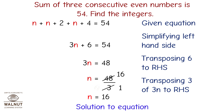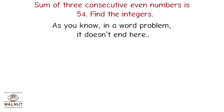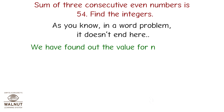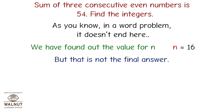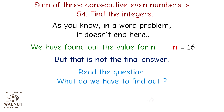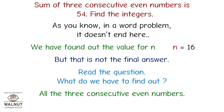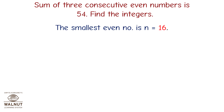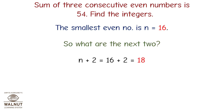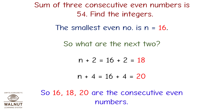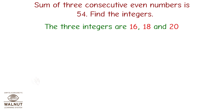Transposing 3 of 3n to the RHS: n equals 48 upon 3, therefore n equals 16. This is the solution to the equation; in a word problem it doesn't end here. We need all three consecutive even numbers. The smallest is n equals 16. n plus 2 equals 18, and n plus 4 equals 20. So 16, 18, and 20 are the three consecutive even integers — that is the final answer.